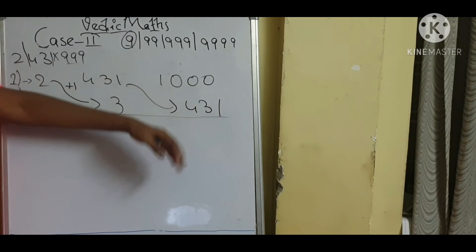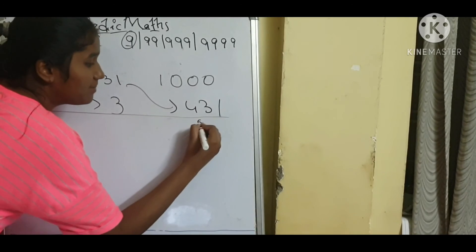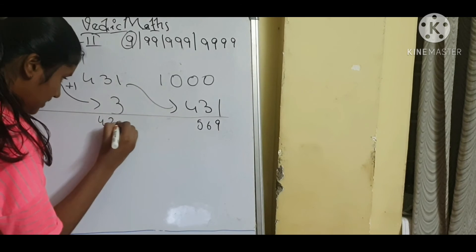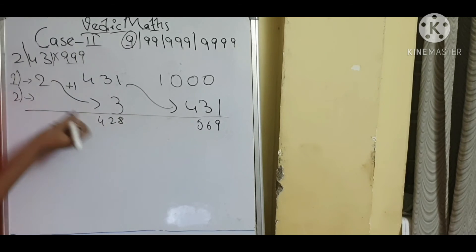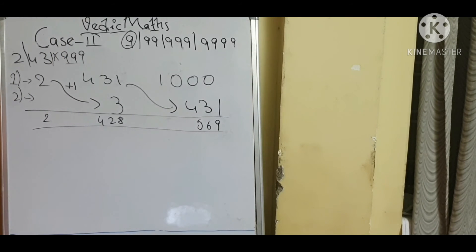Now the calculation: 1000 minus 431 is equal to 569. Next: 431 minus 3 is equal to 428. The next digit as usual is 2. So my answer will be 2,428,569.